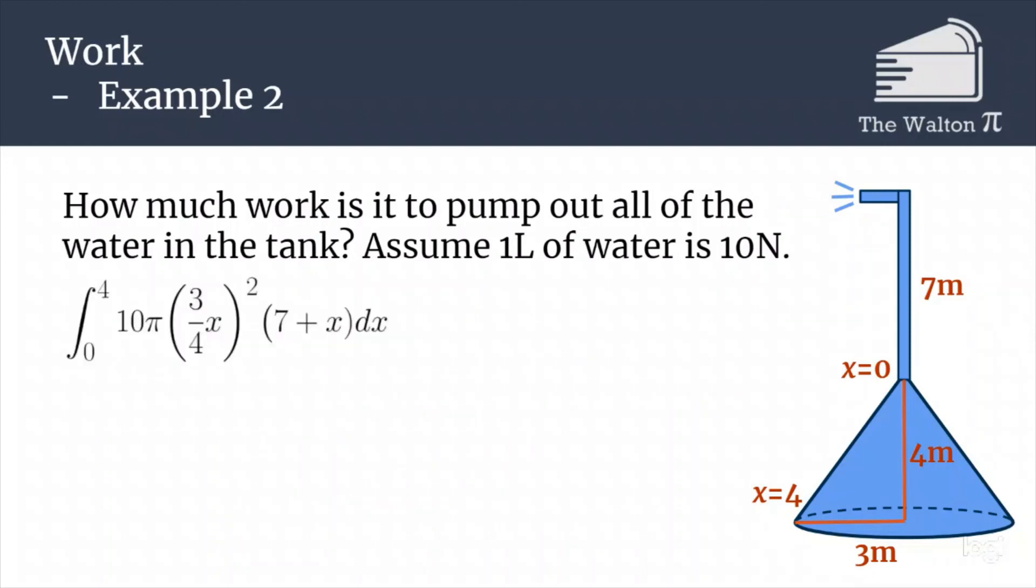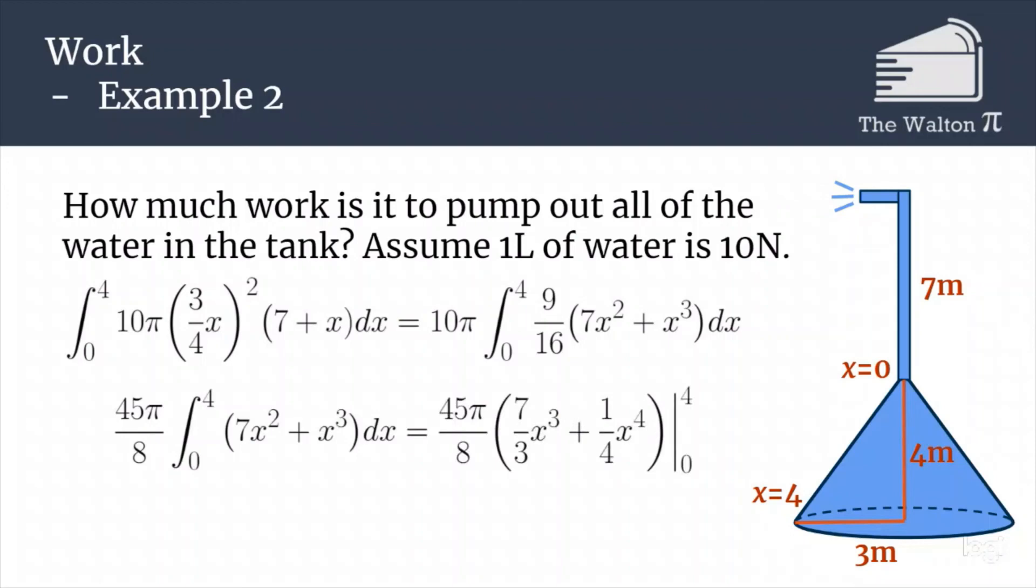If we go through and calculate what this integral would be, we would be able to pull the 10 pi out and distribute a little bit of stuff in the multiplication. We'd get 10 pi times the integral from 0 to 4 of 9/16 times (7x squared + x cubed). That becomes 45 pi over 8 times (7/3 x cubed + 1/4 x to the 4th) evaluated from 0 to 4. So that becomes 45 pi over 8 times (7/3 times 64 + 64). This becomes 45 pi over 8 times 10/3 times 64, which is 15 times 80 pi, which is 1200 pi.